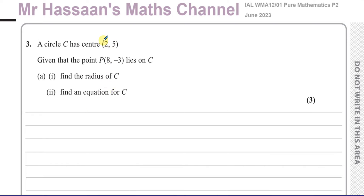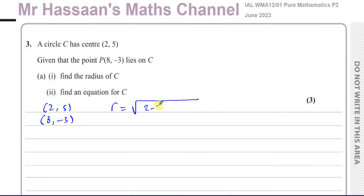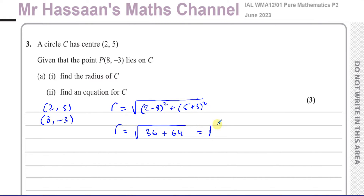So we need to find the distance between the point (2, 5) and the point (8, -3), for which we can use the distance formula. The radius is going to be equal to the square root of (2 minus 8) squared plus (5 minus -3) squared. That's the square root of (-6) squared plus (8) squared, which is the square root of 36 plus 64, which is the square root of 100. So therefore, the radius of the circle is 10 units.